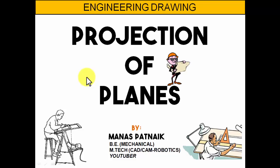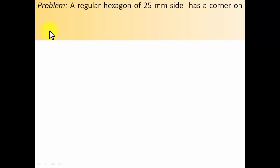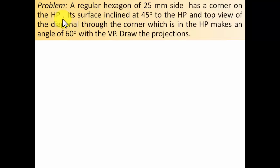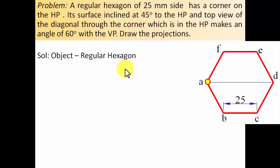Hi guys, this is your friend and tutor Manas, and today we'll be continuing with the discussion on projection of planes. The problem goes like this: a regular hexagon of 25 mm side has a corner on the HP, its surface inclined at 45 degrees to the HP, and the top view of the diagonal through the corner which is in the HP makes an angle of 60 degrees with the VP. Draw the projections.